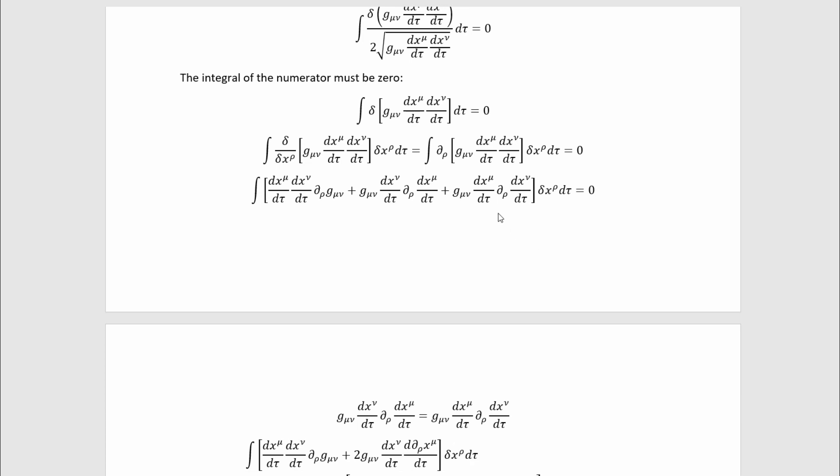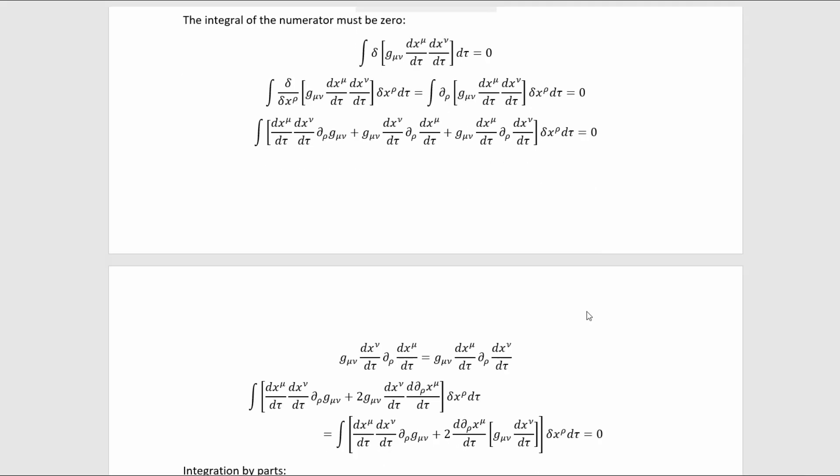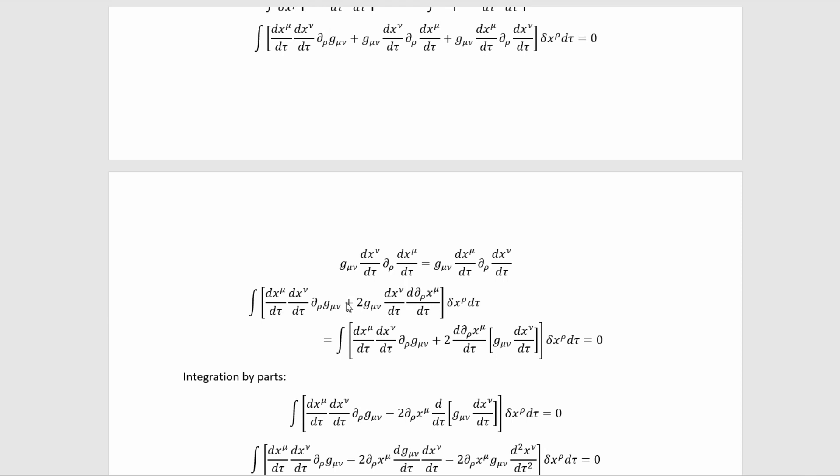The next thing I did was I just used the product rule with this partial derivative. It's pretty straightforward. There isn't anything tricky there. Because the metric tensor is symmetric, this quantity is equal to this one. So we can combine like terms up here to get this thing right there.